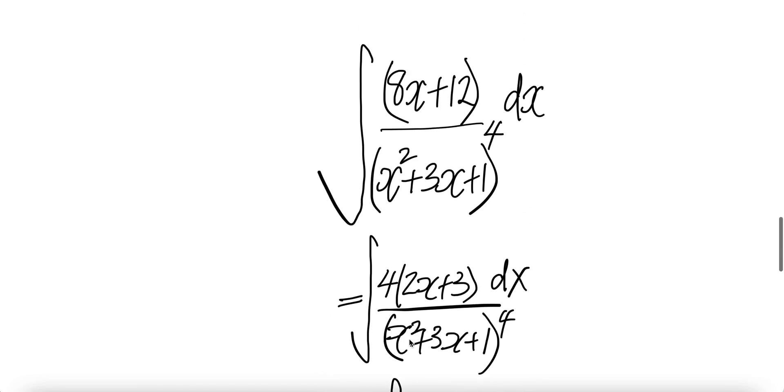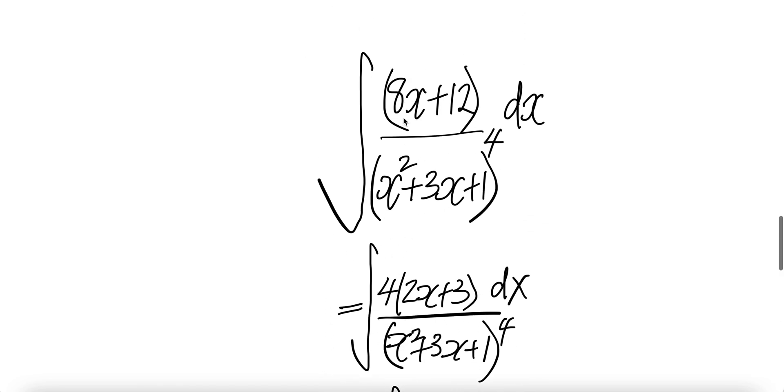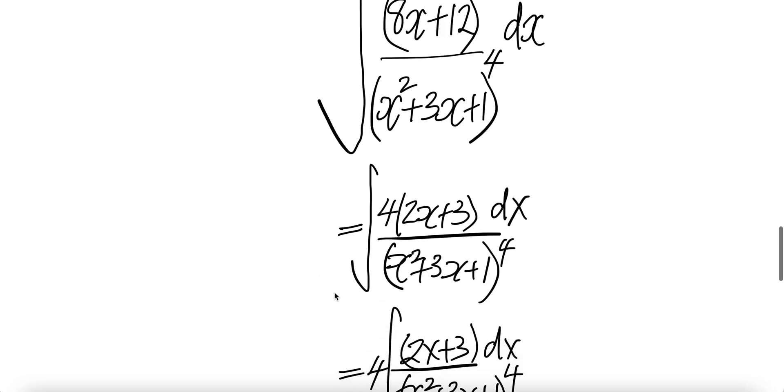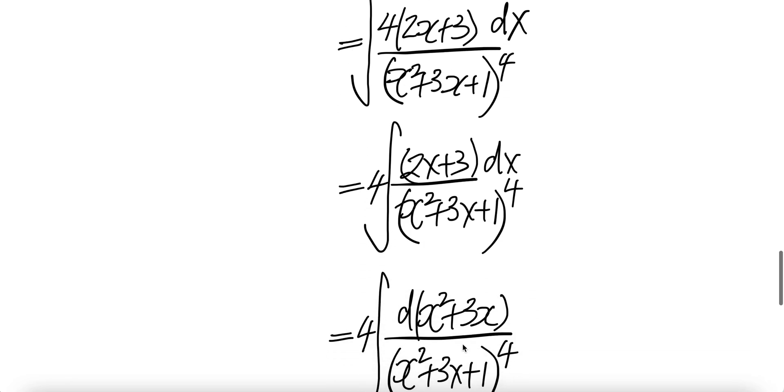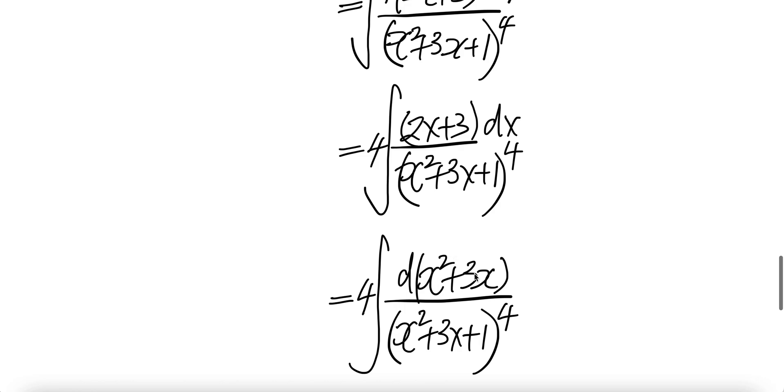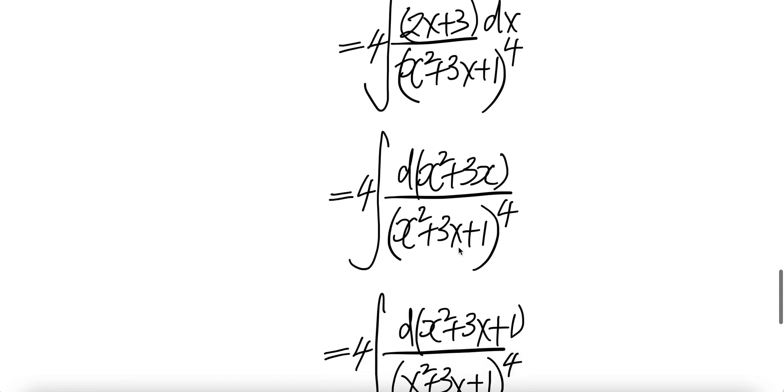Let's look at the second one. We are going to do the same. Pull out the 4 and then you have 2x plus 3 here. 4 out and then you have 2x plus 3 dx. And we are going to push this into dx. The derivative of x squared plus 3x, you get 2x plus 3. And then put a 1.